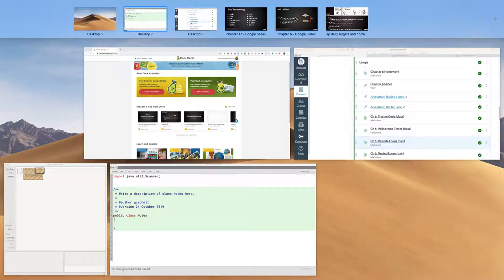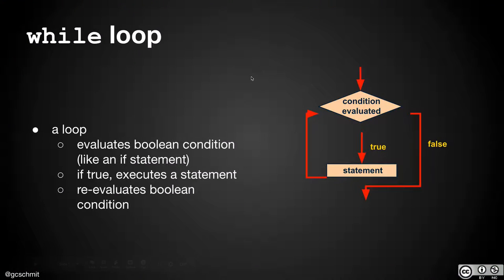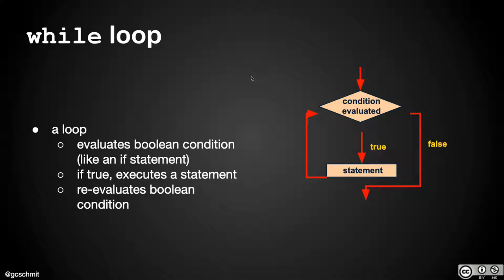Let's take a look at our while loop. We're going to look at the flowchart first. In terms of our flowchart, a diamond is a condition — a Boolean expression that evaluates to either true or false — and based on whether it evaluates to true or false, we take one path or the other, just like we did with an if statement.